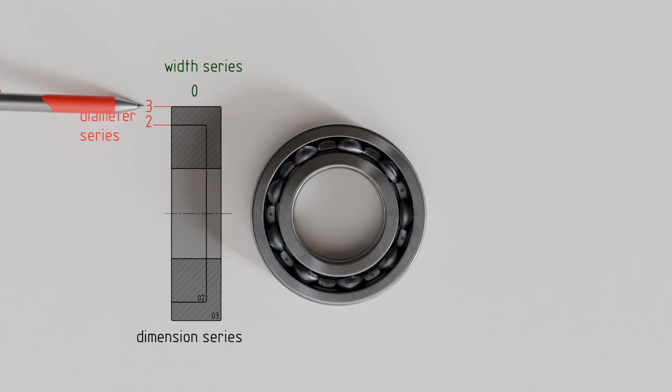Conversely, with a lower diameter series, for example diameter series 1, the outer diameter of the bearing decreases, and the width also decreases accordingly.